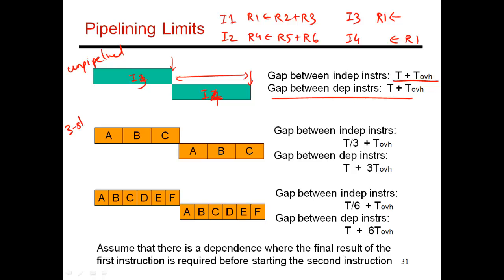Now I move to a three-stage pipeline, ABC. Let's take the gap between independent instructions, I1 and I2. So I1 starts over here and goes through stages ABC. Since I2 is independent, it can start right here. So I2 starts over here. It does A, B, and C over here. So it finishes at this point.